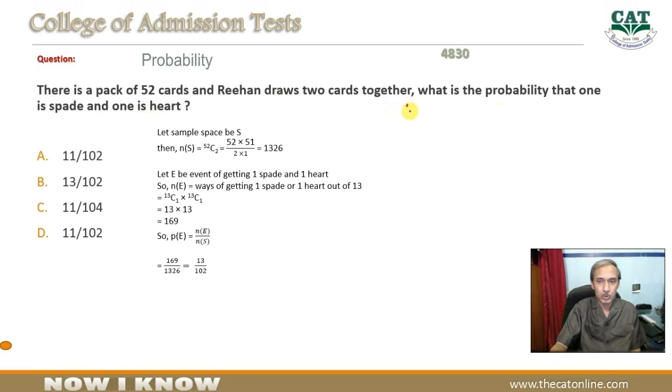Total cards 52 hain. Jis mein spade ki tadad hogi 13. Isi tareeqe se heart jo hai woh bhi 13.